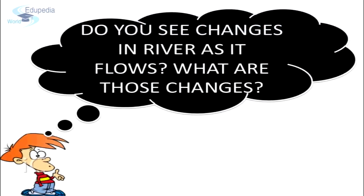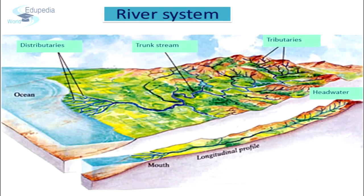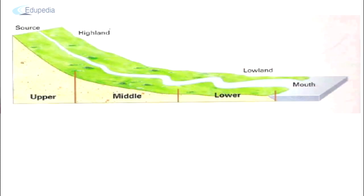Do we see a river flowing in the same manner right from its origin to its end? Definitely not. As the stream moves water from high elevation like mountains towards low elevation like the ocean at sea level, the work of the stream changes. The journey of the river can be broadly categorized into three stages: the upper stage, also known as the young stage; the middle stage, also known as the mature stage; and the lower stage, known as the old stage.